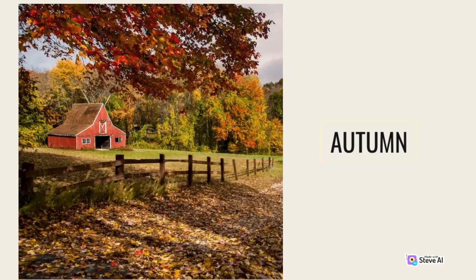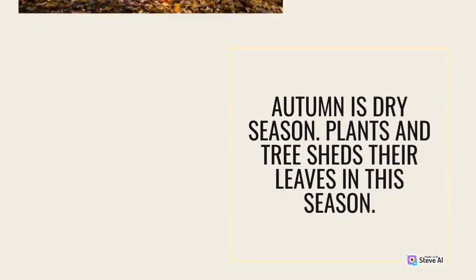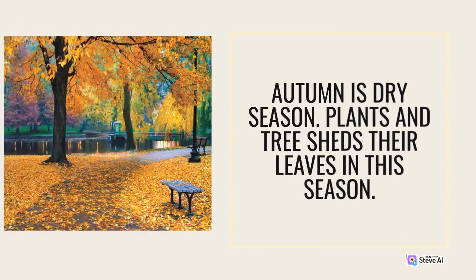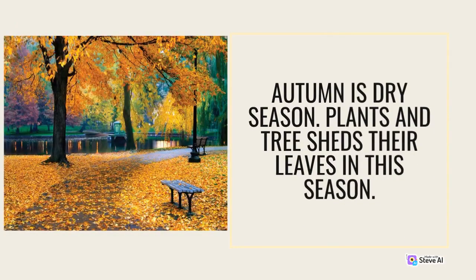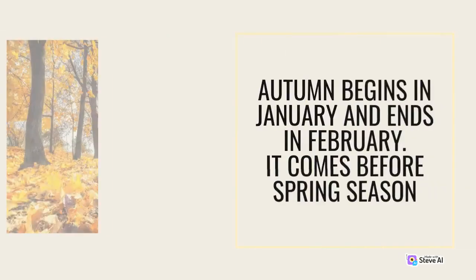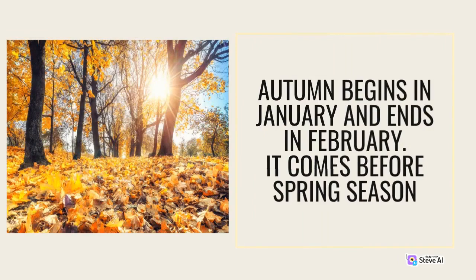Autumn is a dry season. Plants and trees shed their leaves in this season. Autumn begins in January and ends in February. It comes before spring season.